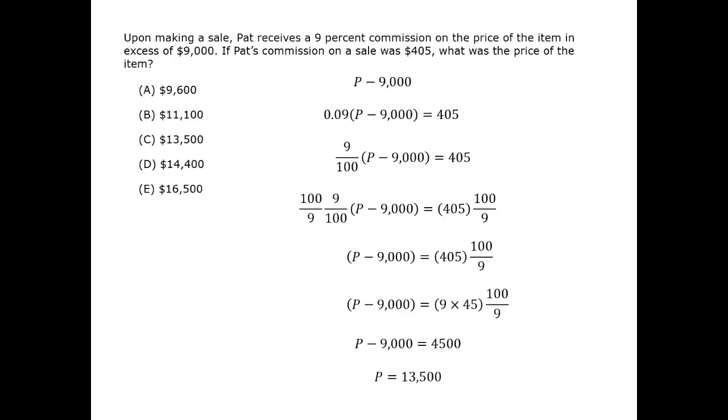And P equals 13,500. We have our answer. We can double check that it makes sense. The amount in excess of $9,000 is $4,500. And her commission was a bit less than 10%, so a bit less than $450. So $405 makes sense. The correct answer is C.